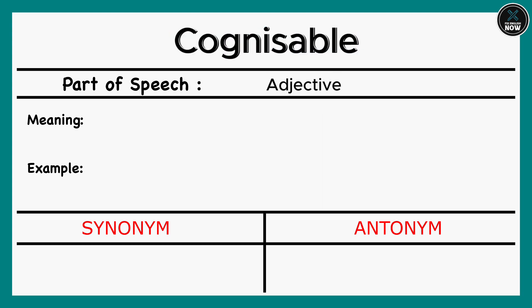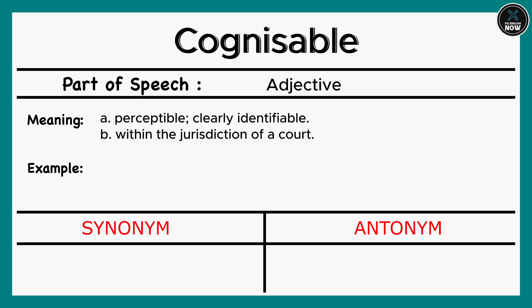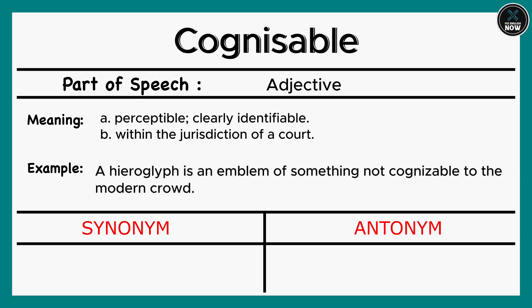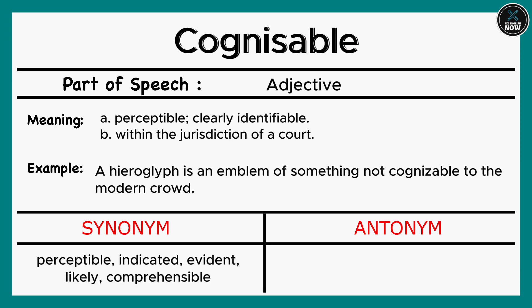Cognizable: A. Perceptible; clearly identifiable. B. Within the jurisdiction of a court. Example: A hieroglyph is an emblem of something not cognizable to the modern crowd. Synonyms: Perceptible, Indicated, Evident, Likely, Comprehensible. Antonyms: Obscure, Inscrutable, Incomprehensible.